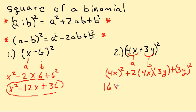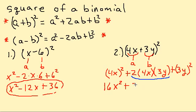Plus (3y) squared. So our final answer: (4x) squared is 16x squared, plus — multiplying 2 times 4 is 8, times 3 is 24 — so plus 24xy, plus (3y) squared which is 9y squared. And that's our final answer.